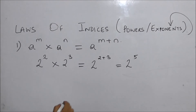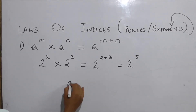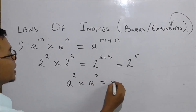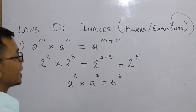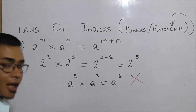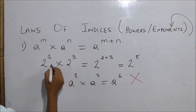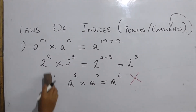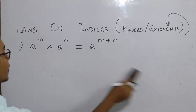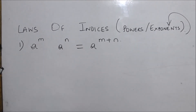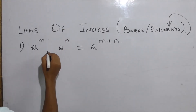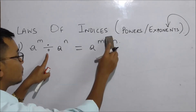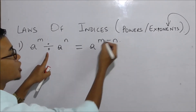2 minus 3. The rule is that if you multiply, you add the exponents, and if you divide, it will be plus and minus — meaning you subtract the exponents.